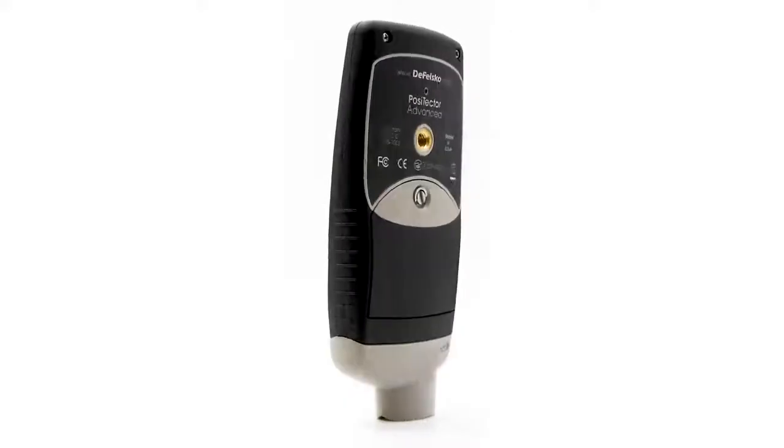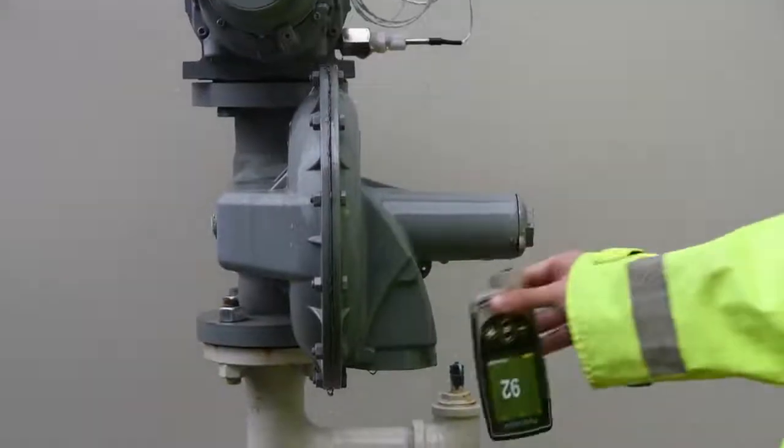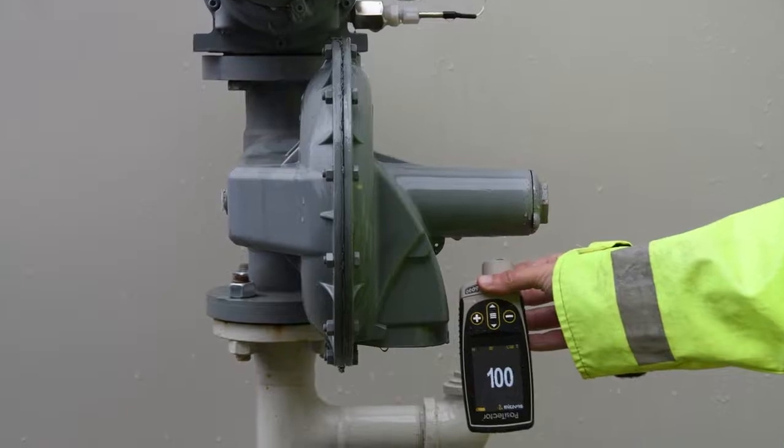The PosiTector 6000 is the simple, durable, and accurate solution for measuring coating thickness on all metal substrates.